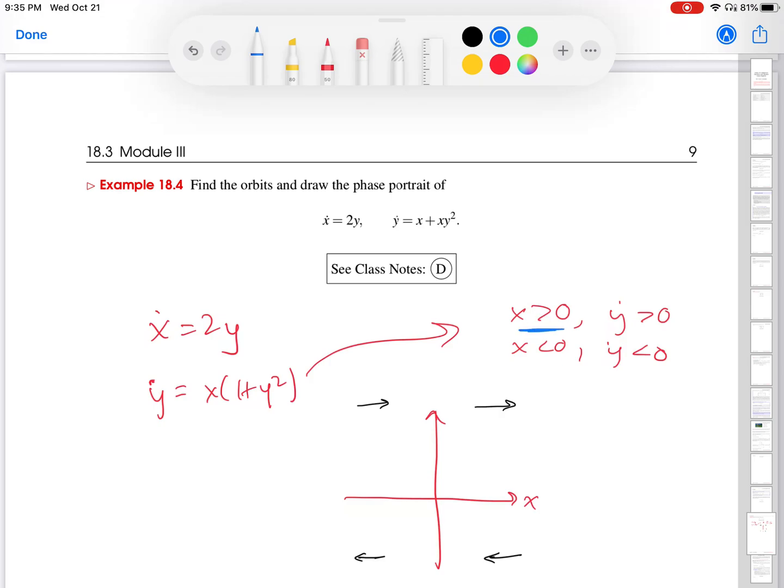This is the right-hand side of the plane, the right-half plane. And Y dot is positive would tell me that Y is increasing. So Y increasing means that on the right-half of the plane, I'm going up.